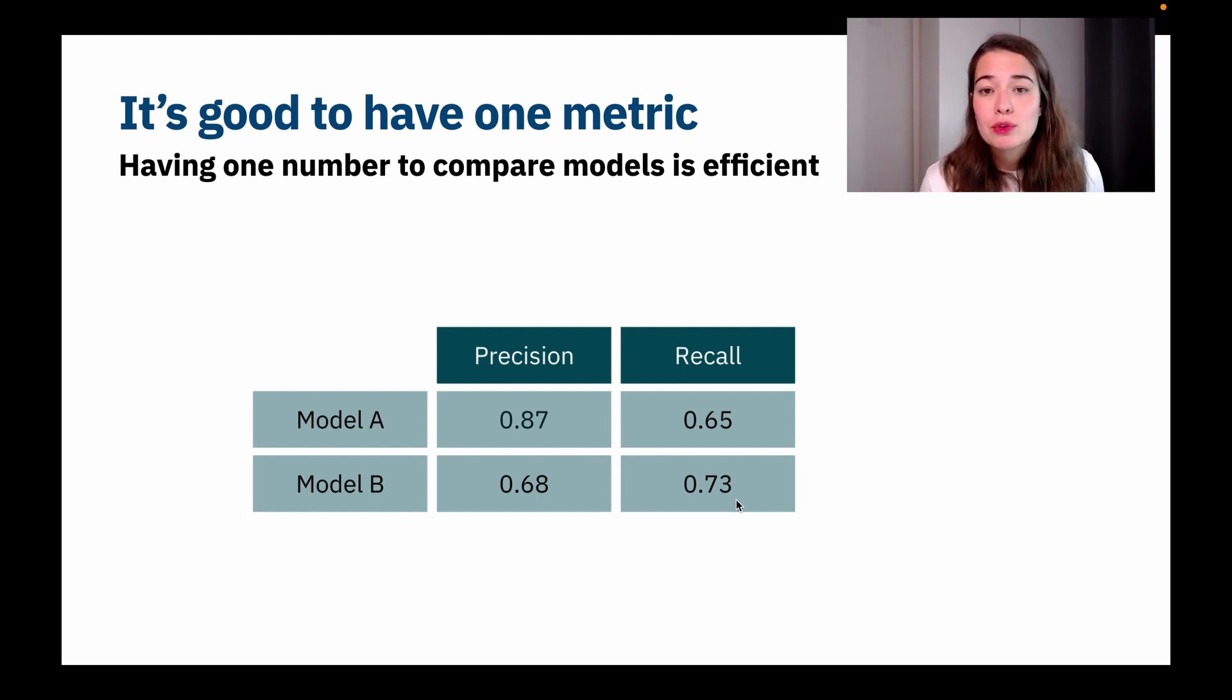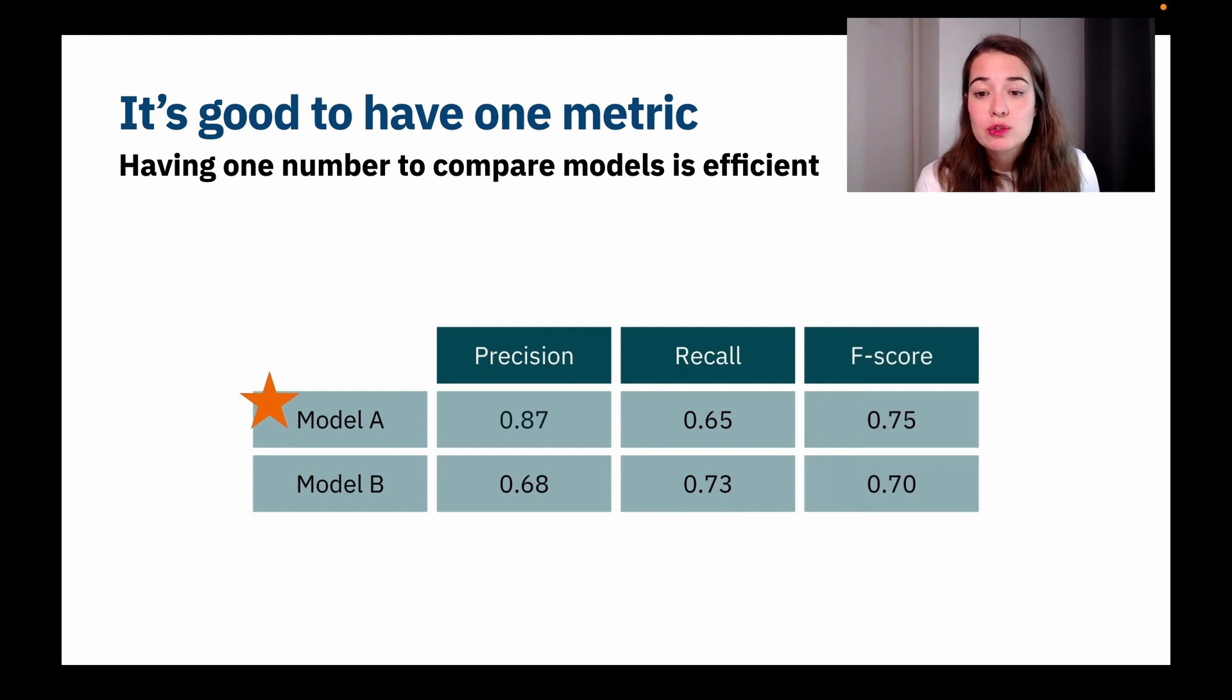So what you can do, for example, is to use a combination of precision and recall. Of course, you can take an average of them, or you can use something called an F-score. This is practically the average of precision and recall, but it's calculated a little bit differently. So in that case, it will help you to see which one actually is better than the other one based on the F-score.